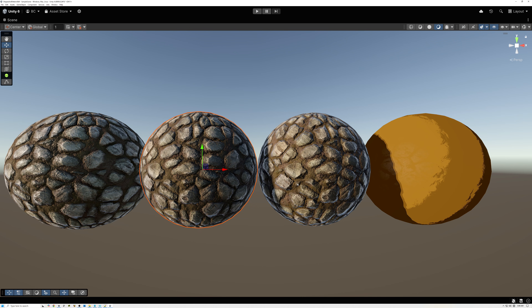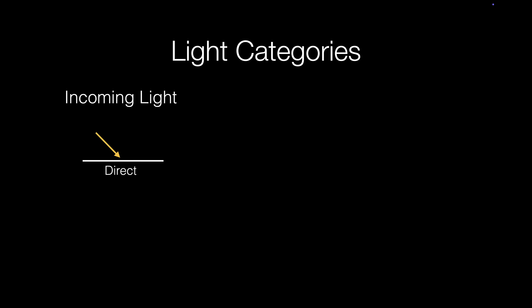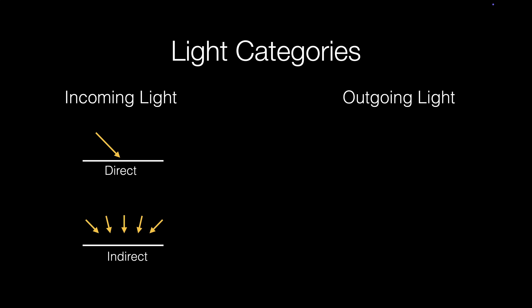Let's take a minute to talk about light and how we deal with it in computer graphics. Light comes from two types of sources: direct light sources, where light is shining directly on the surface from the source in a single direction, and indirect sources, where light is bouncing around the environment and coming in from all directions before hitting the surface. After light hits the surface, there are two types of surface interactions we're going to discuss. Specular light leaves the surface in one main focused direction, while diffuse light is scattered and leaves the surface in all directions. We're going to concentrate on these two most common types today.